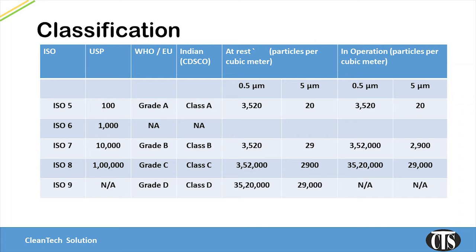In Grade C or Class C or Class 100,000, the particle size at rest condition is similar to Grade B's particle sizes in operation condition. In operation condition, the particle sizes in Grade C are 352,000 and 29,000 respectively for 0.5 micron and 5 micron. We will notice that similar particle sizes appear for Grade D at rest condition. In Grade D, we do not count the particle size in operation conditions.